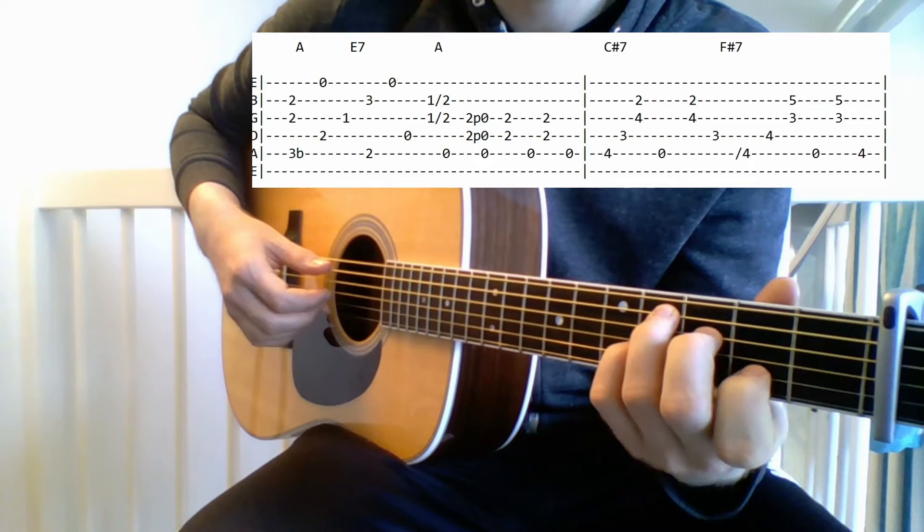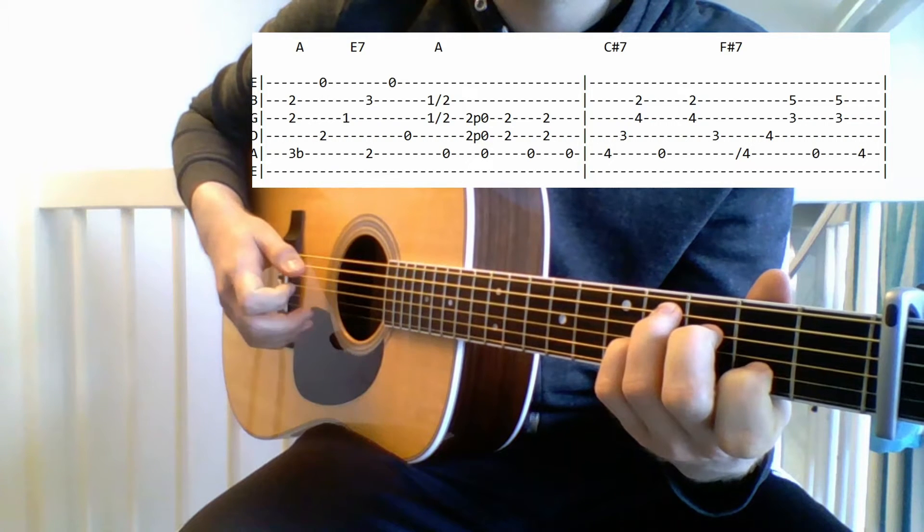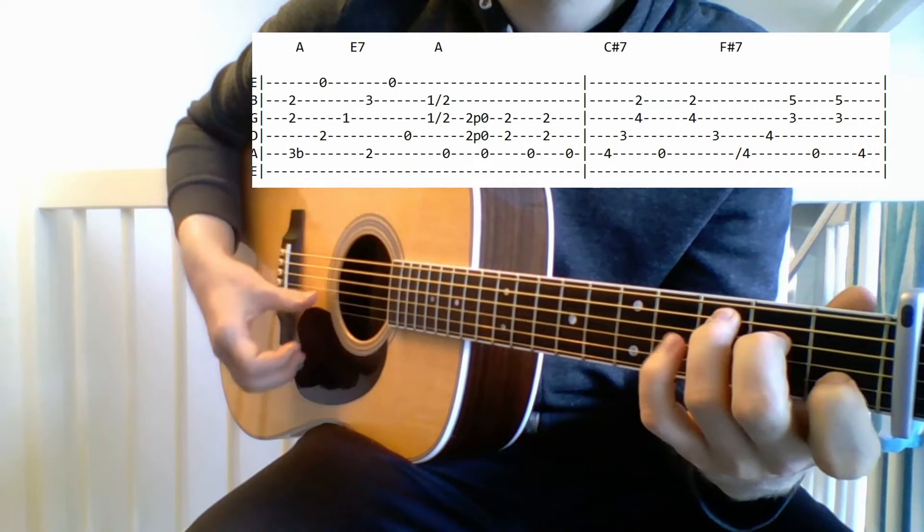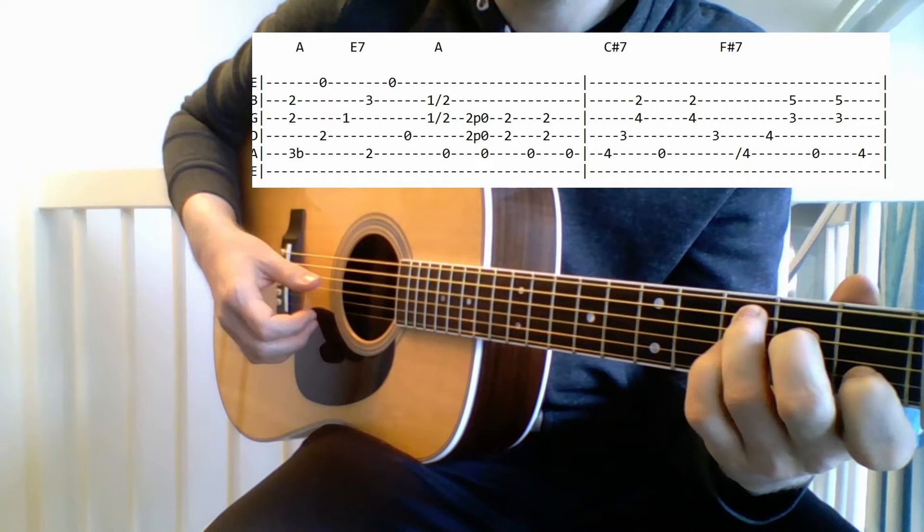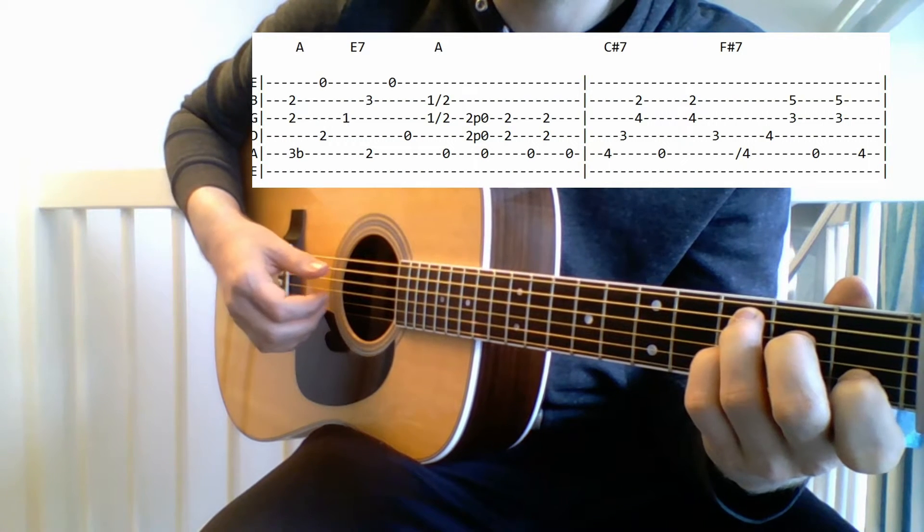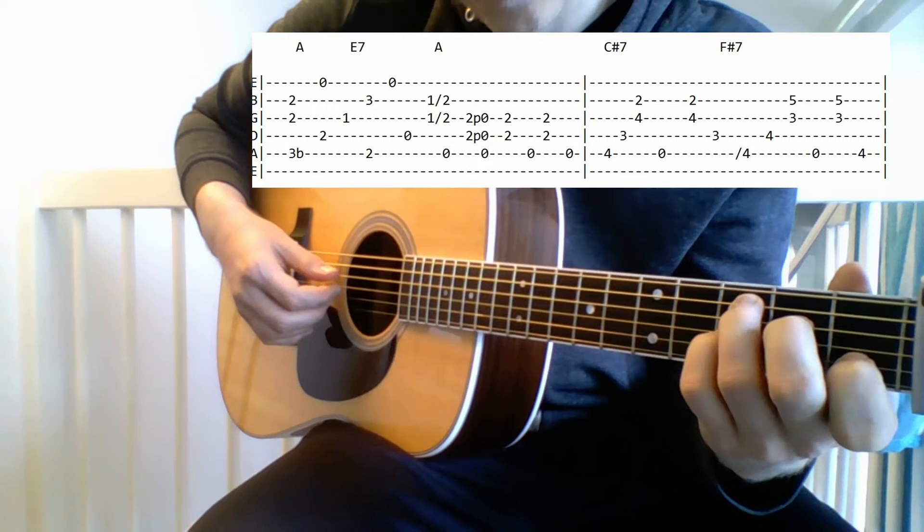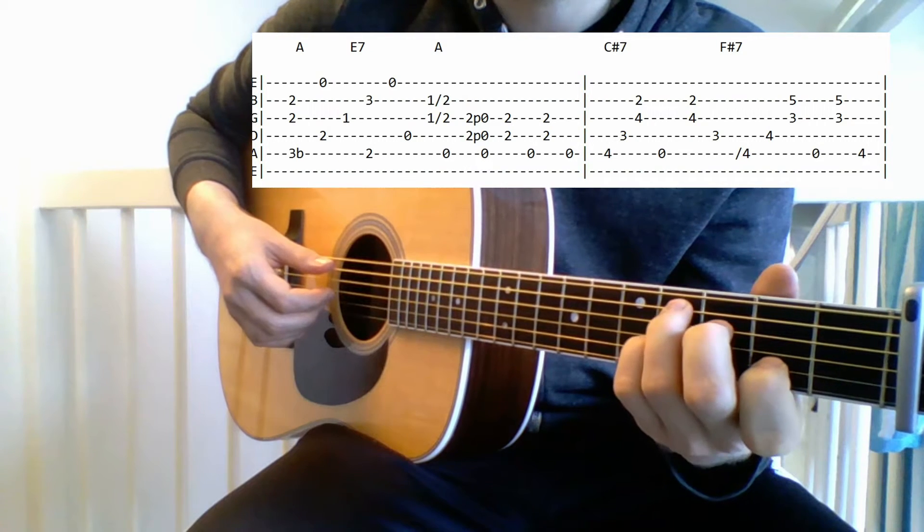Then we're going into the C sharp 7. So this is a C chord with the 7th here fretted on the G string, and it's moved up one fret.